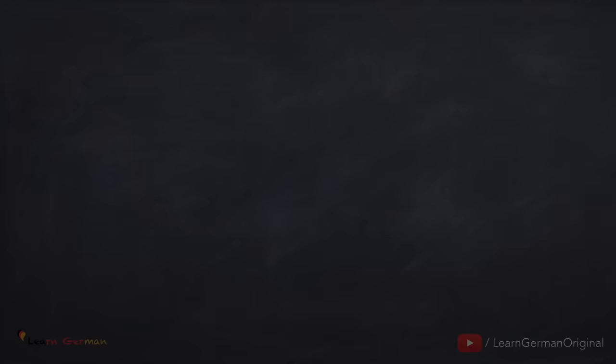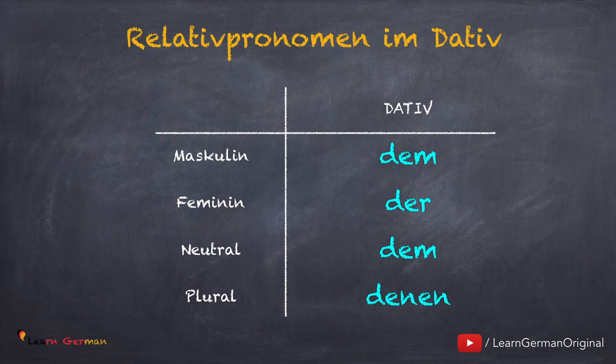Sehr schön. Hier ist eine Übersicht, welche die Relativpronomen für Dativ sind. Die Relativpronomen für Maskulin, Feminin und Neutrum sind genauso wie die Dativartikel. Für Maskulin: dem. Für Feminin: der. Für Neutrum: auch dem. Und für Plural heißt es: denen.